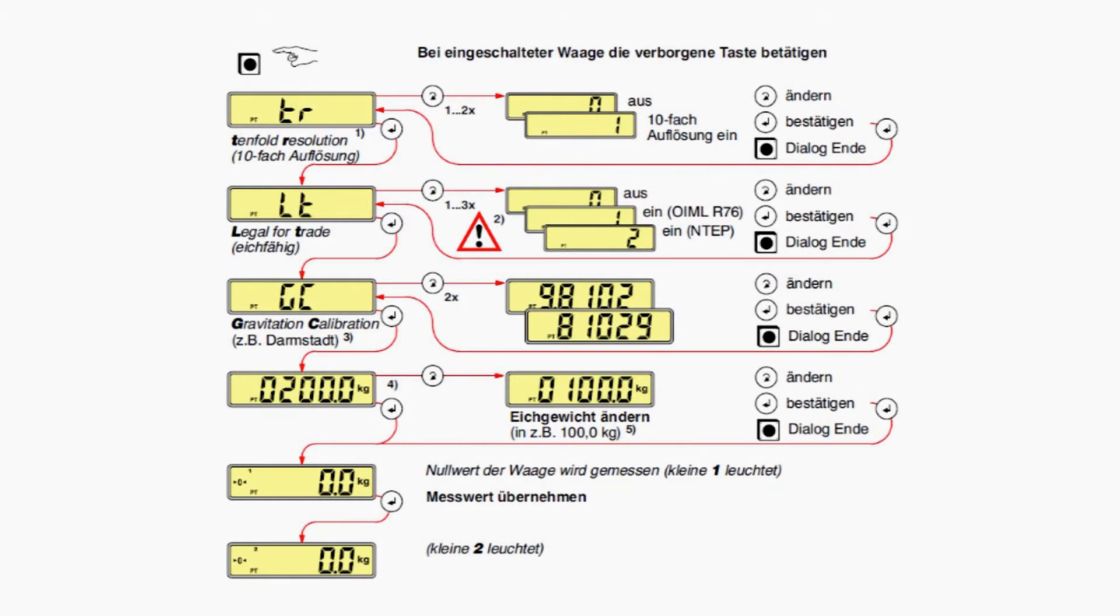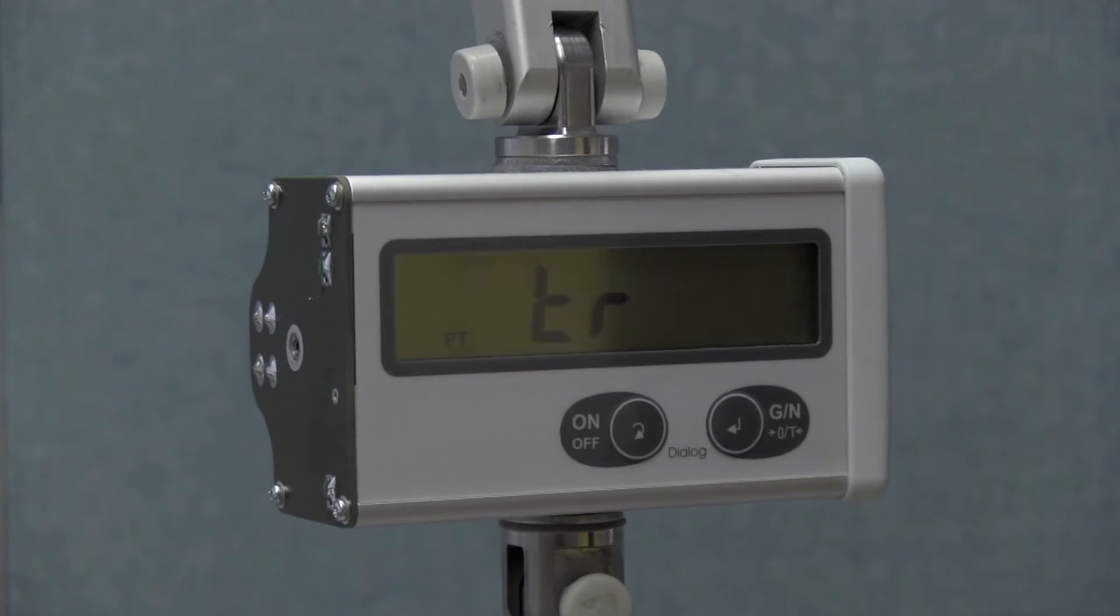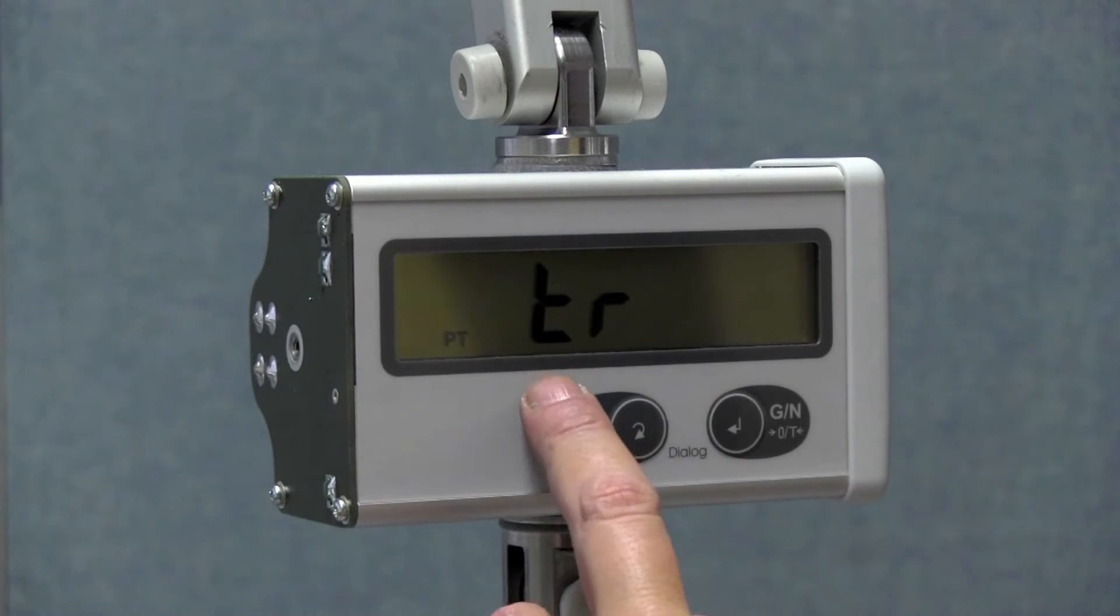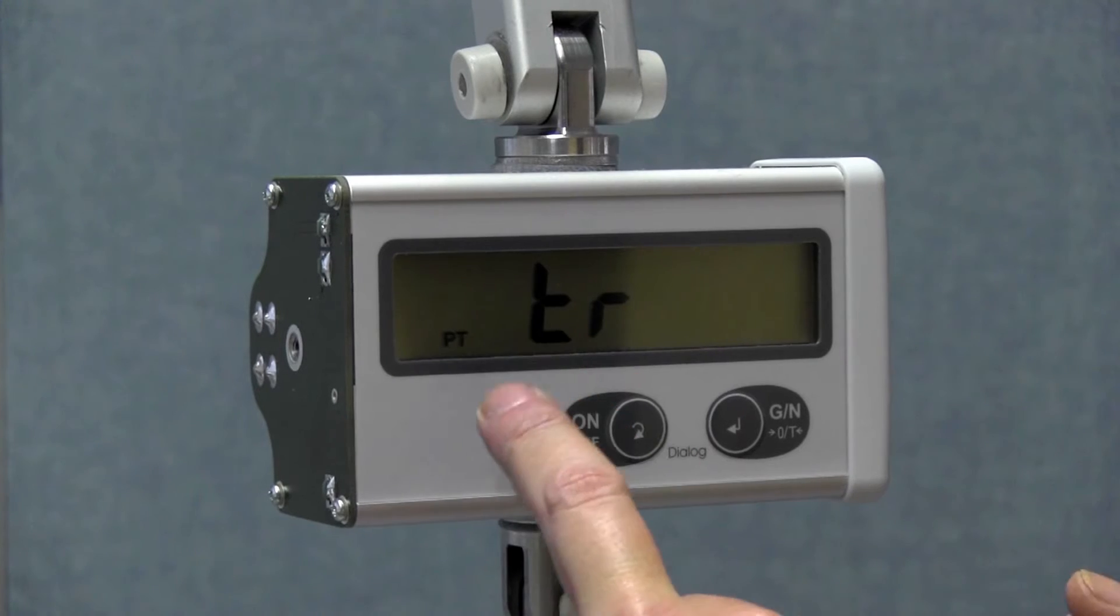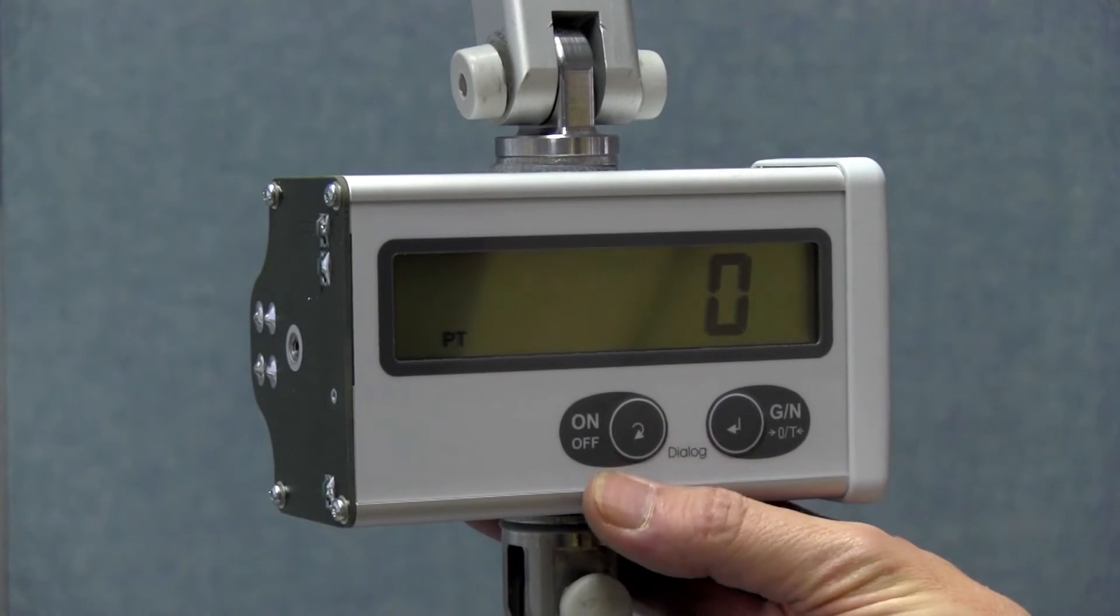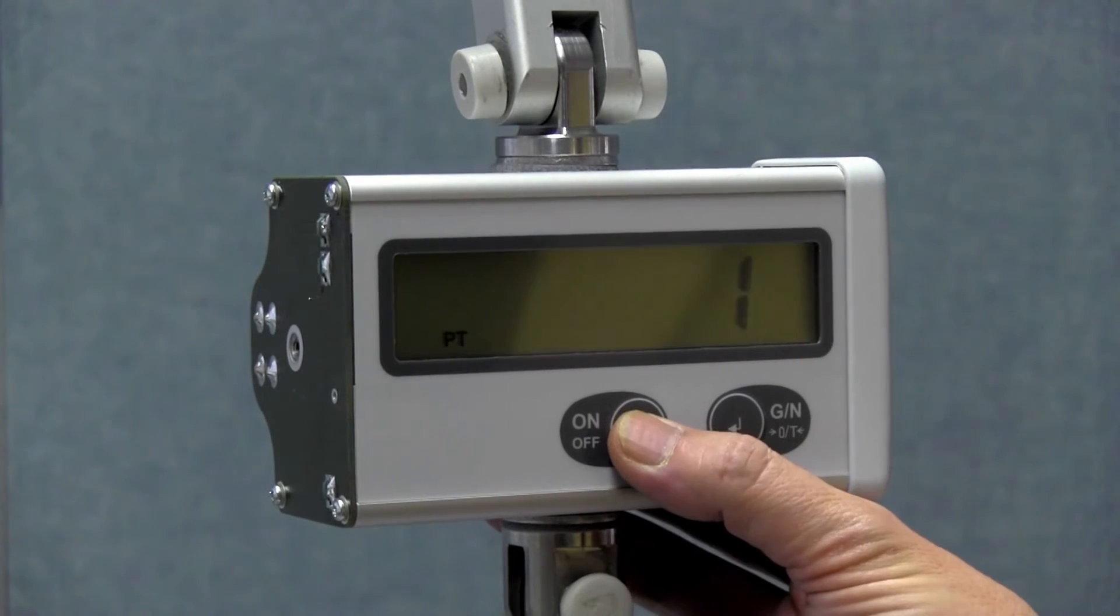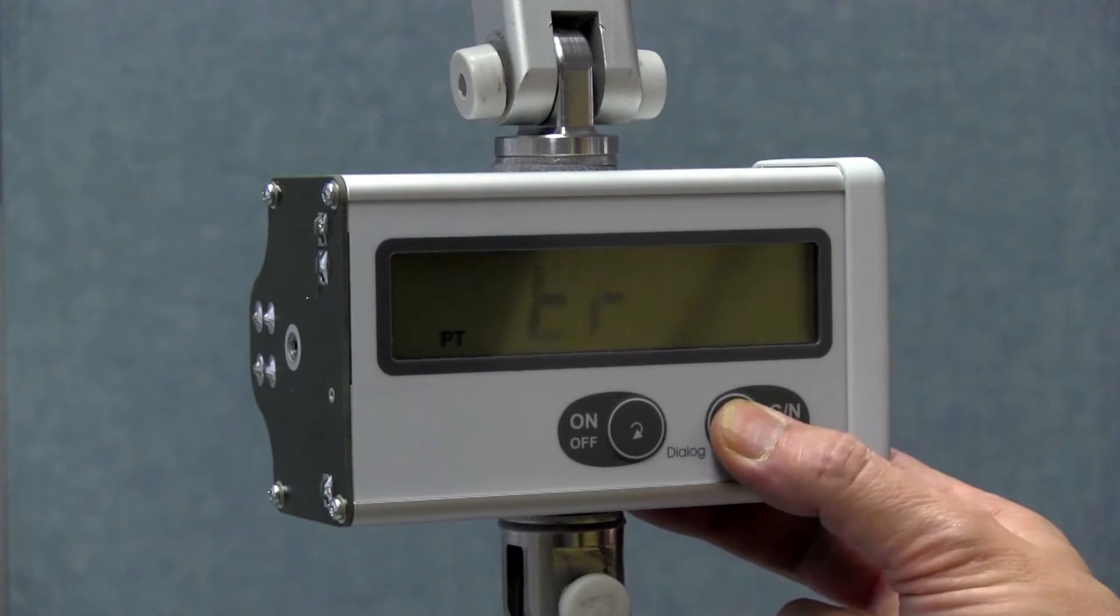Now I press the hidden button to go to the setup parameters menu, and the first query criterion is tenfold resolution. The setting of the resolution in the display, one or two places after the decimal. I can either turn it on or off, zero is turned off, and one is turned on. I set one in this case.